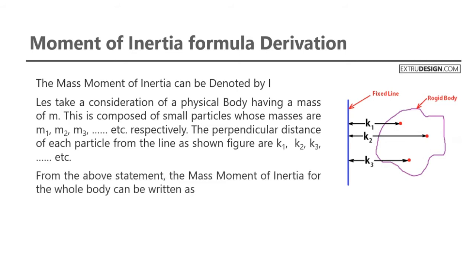From the above statement, the mass moment of inertia for the whole body can be written as I equals m1 k1 square plus m2 k2 square plus m3 k3 square and so on.